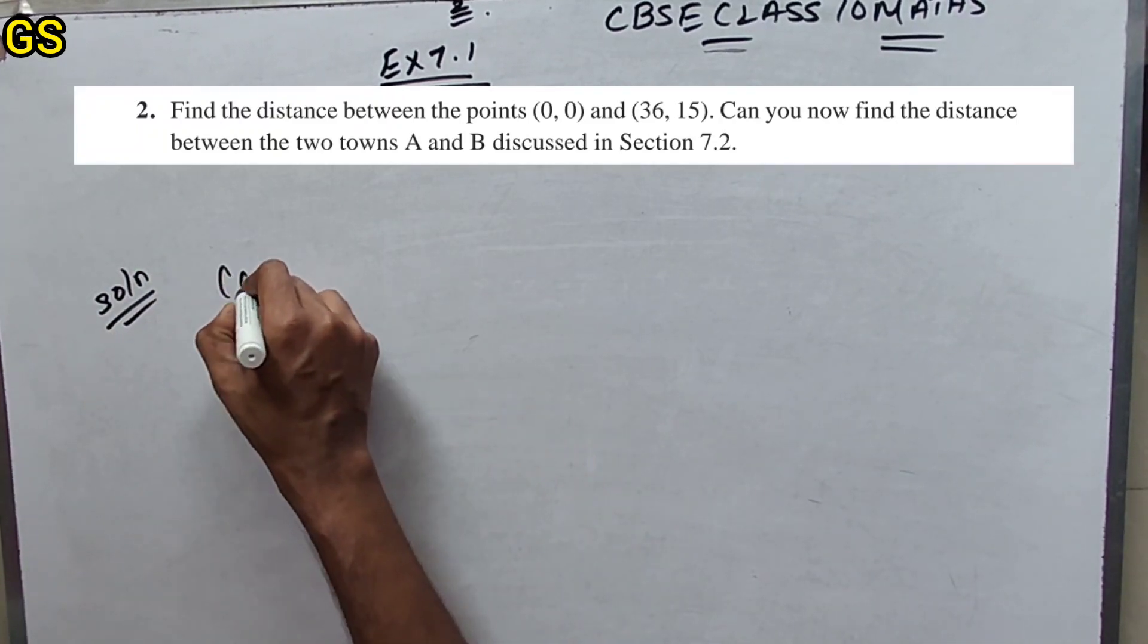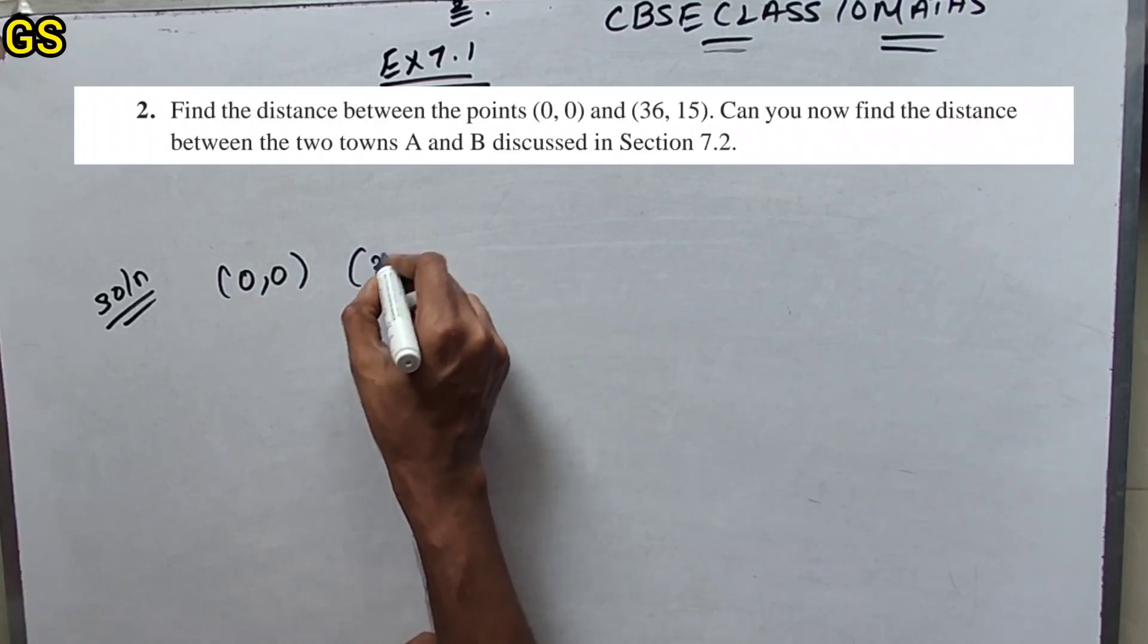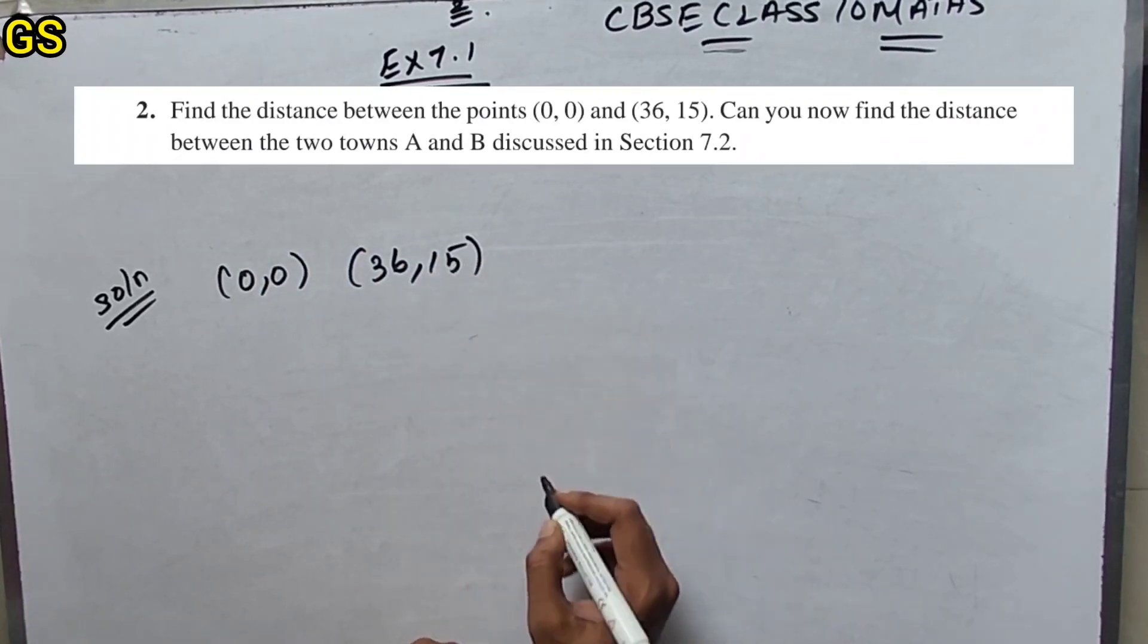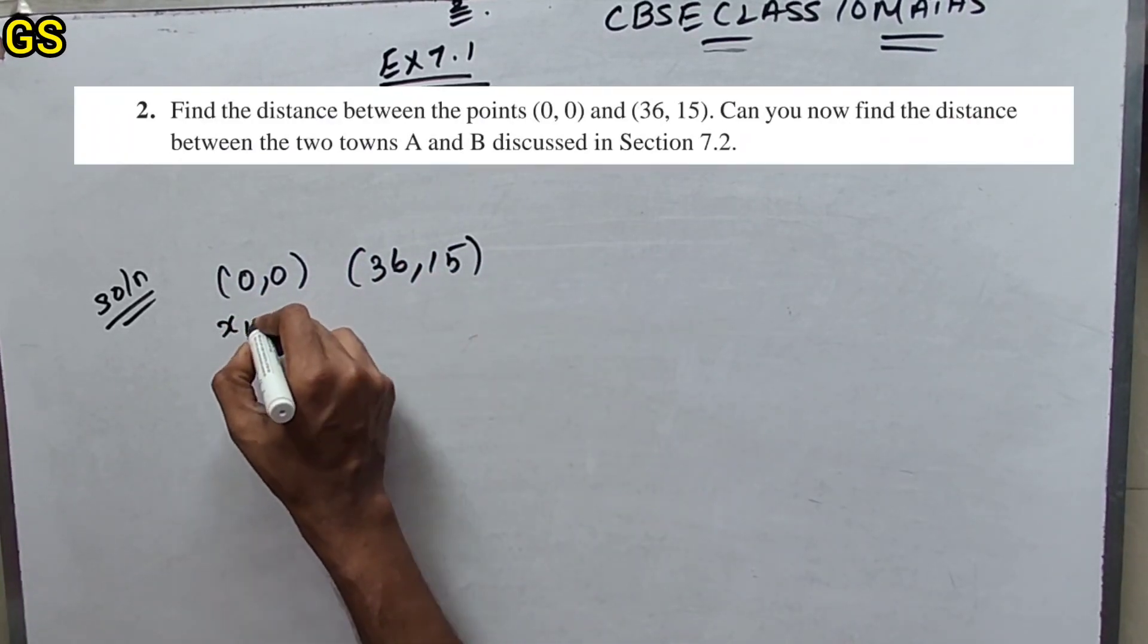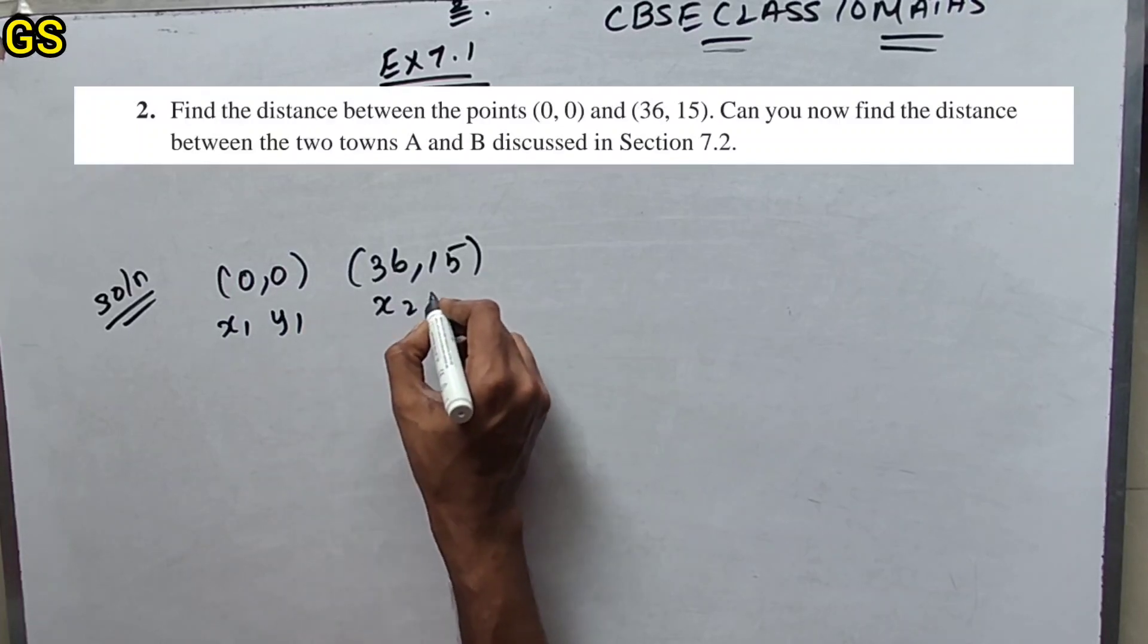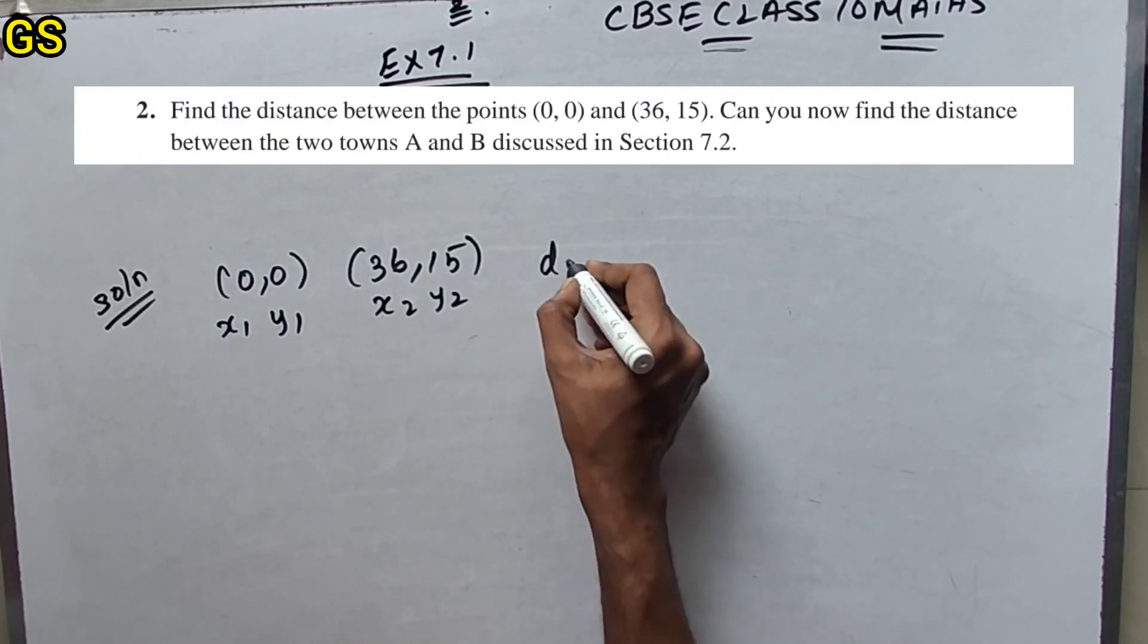We will find the distance between (0,0) and (36,15). So this is x₁,y₁ and this is x₂,y₂. Distance formula recall.